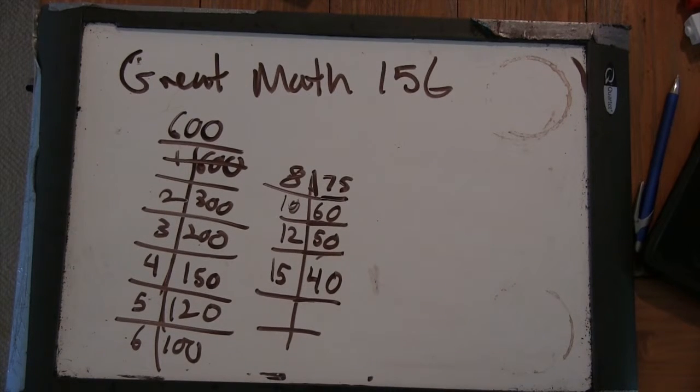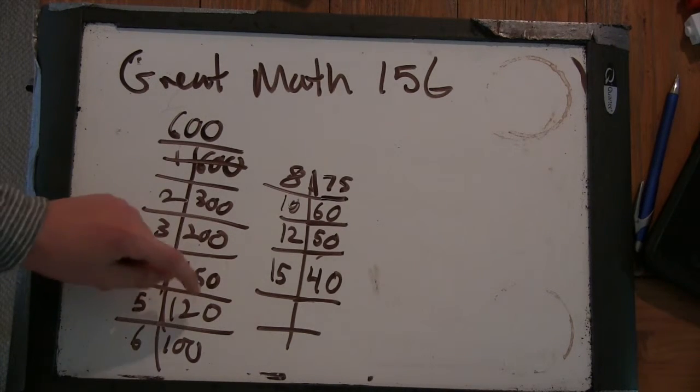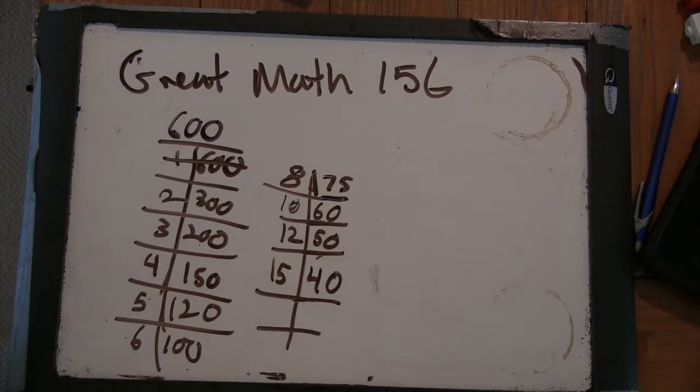How did you figure out it was 15 times 40 was 600? Well, I took the 5 times 120, and I took the 3 from the 120, it leaves 40. And 5 times 3 is 15. Interesting. Great, good job.